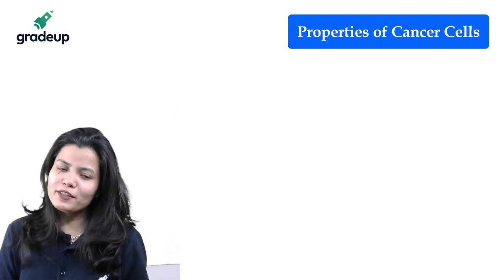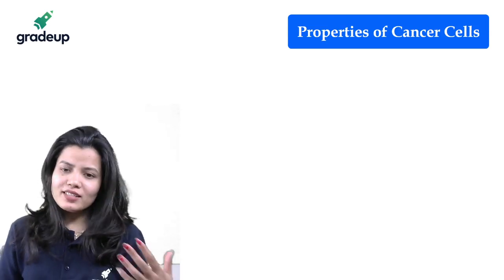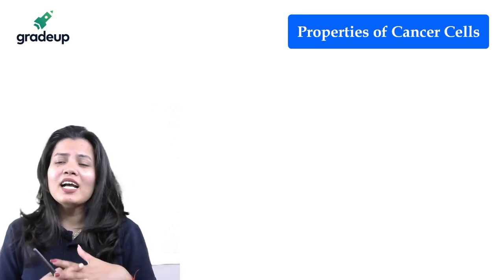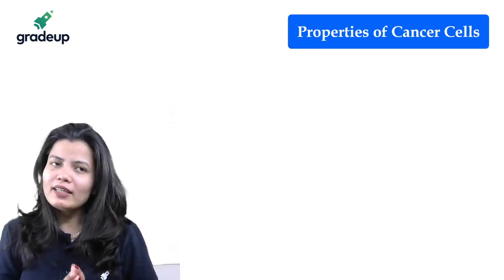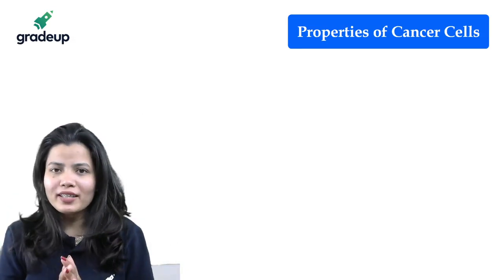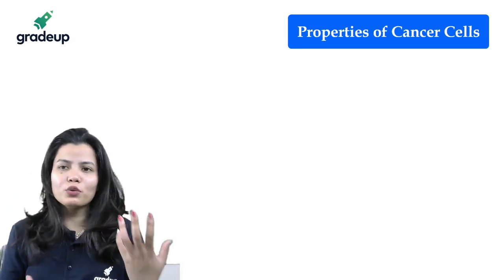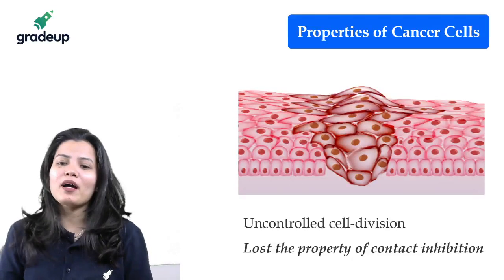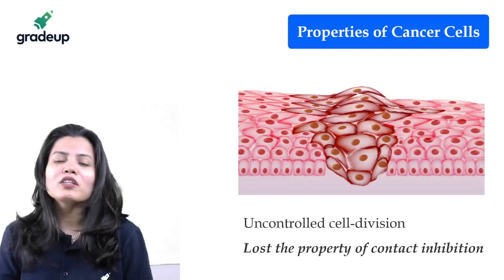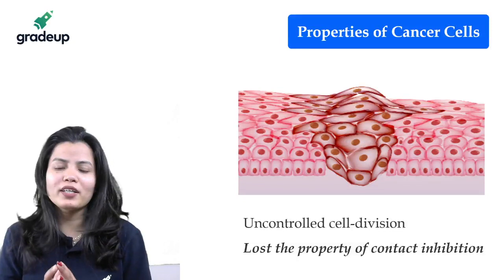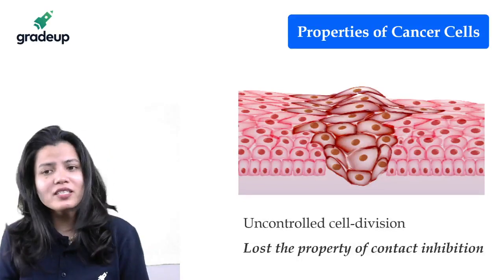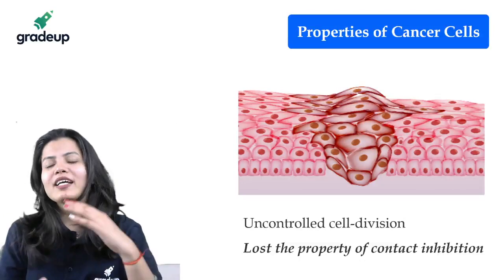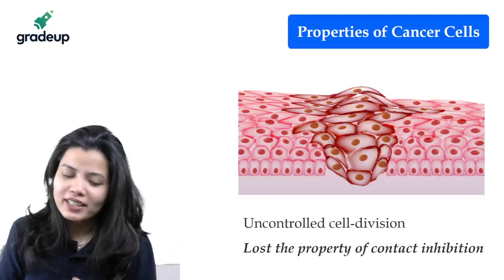What are the different properties of cancer cells? Cancer cells show uncontrolled division. The normal cells have a property that when two cells come into contact, their growth stops. But these cancer cells don't have this property — they have lost the property of contact inhibition. They don't have this contact inhibition property, so they divide in an uncontrolled manner.